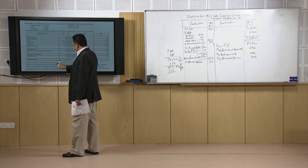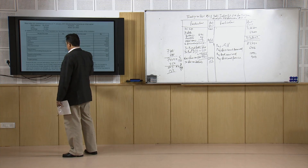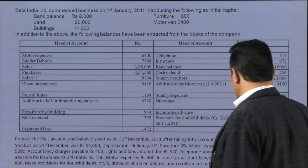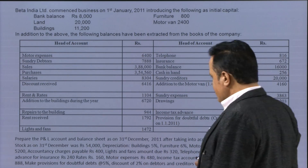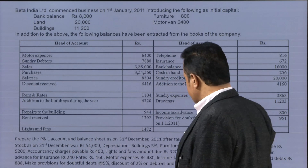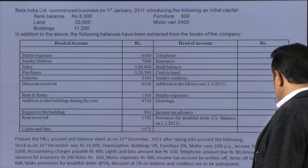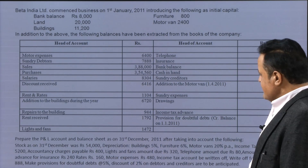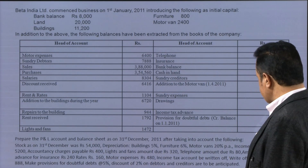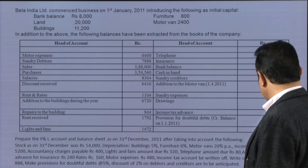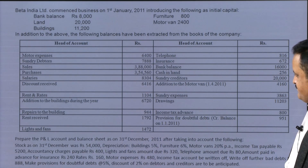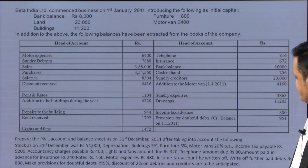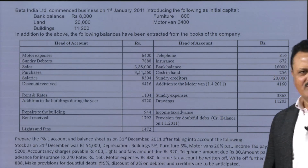Let us check the adjustments: stock 54,000 done; depreciation on building 5% done; furniture 6% done; motor vans 20% done; income tax to be adjusted; accounting charges taken; light and fan adjusted; telephone 80 rupees due done; amount paid in advance for insurance taken; motor expenses taken; income tax to be written off; further bad debts of 888 done; provision for doubtful debts at 5% done; discount of 2 percent on debtors and creditors done.